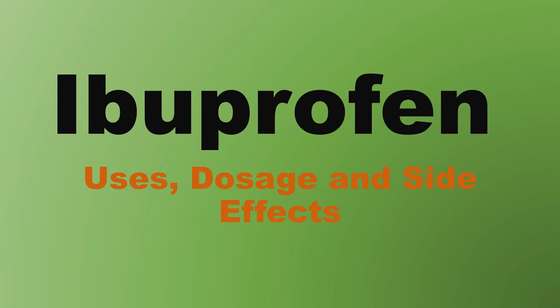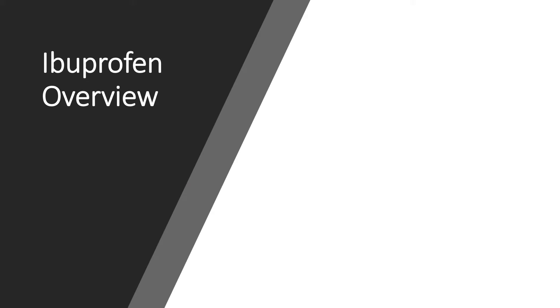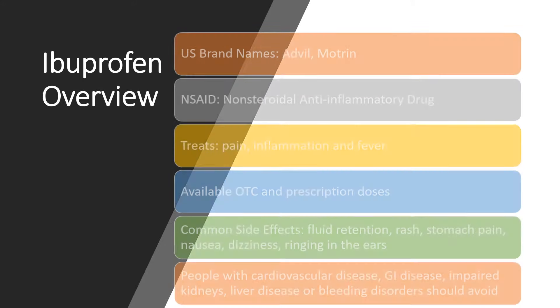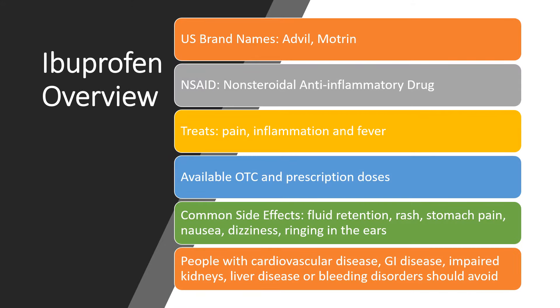Hi, this is Josh, pharmacist with Pharmacist Tips, here to talk to you about ibuprofen. We're going to discuss some of the uses, common dosages, as well as side effects that can be experienced with this medication. In the US it's sold under the brand names Advil and Motrin. You'll also find it under many store brand generics. It is an anti-inflammatory, or what we call a non-steroidal anti-inflammatory drug, abbreviated NSAID.